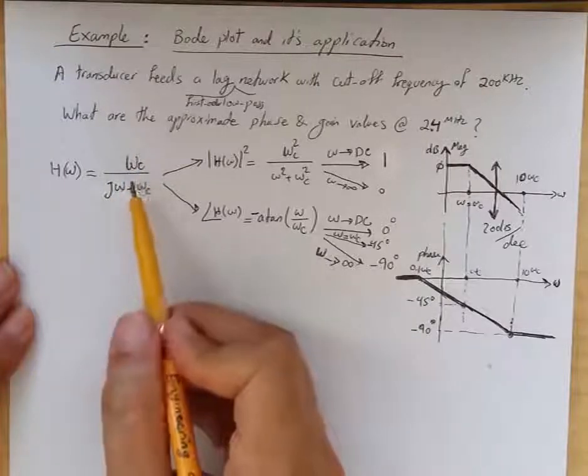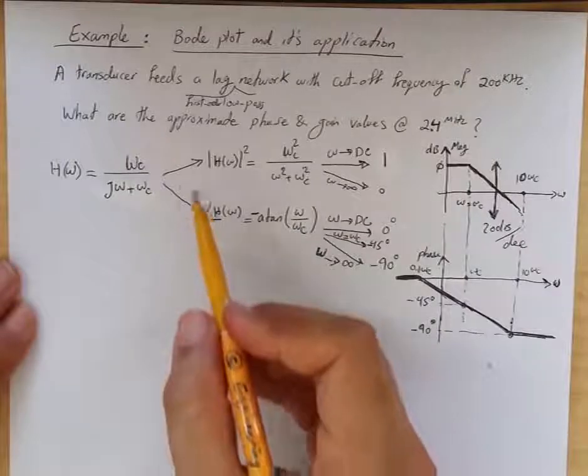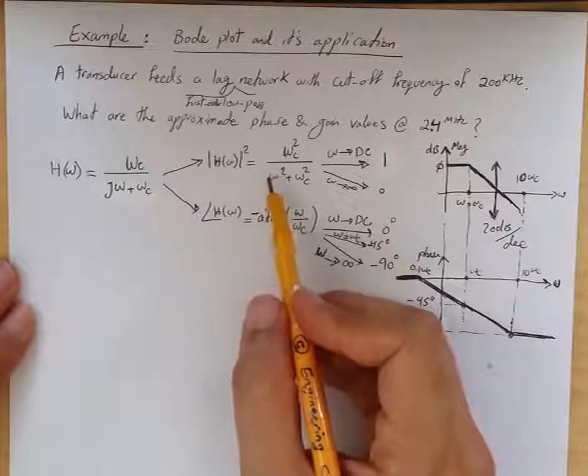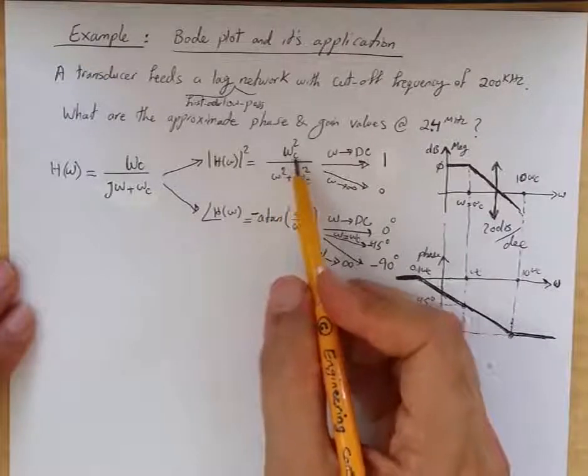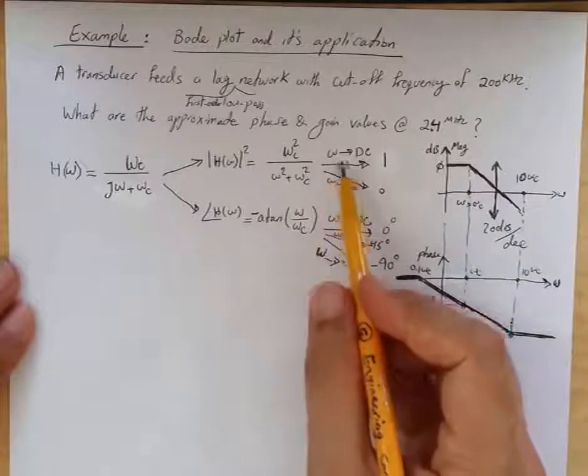The reason for this format is that it gives us a nominal gain of 1 at DC. For the magnitude, |H(ω)|² equals ωc² divided by ω² plus ωc². When ω approaches DC, this value becomes 1.